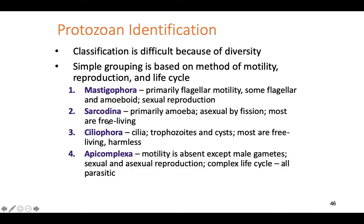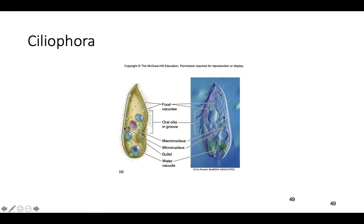Ciliophora — these guys all have cilia, are capable of encysting, and the vast majority are free-living and almost completely harmless. The cilia are only found in eukaryotic cells and are used for movement.